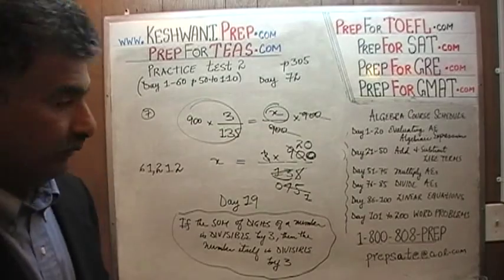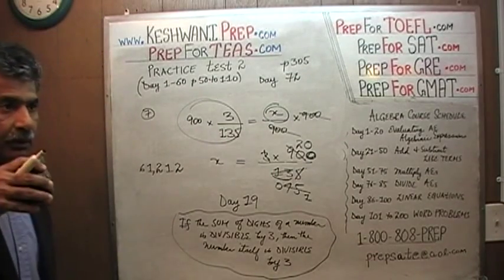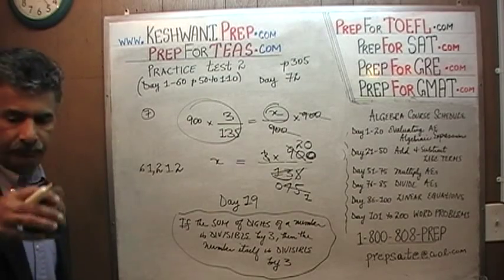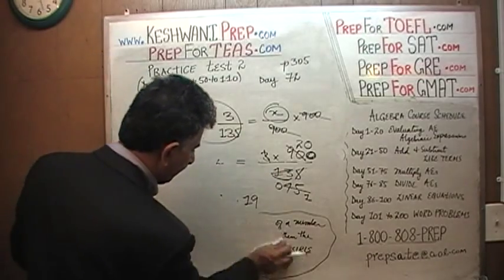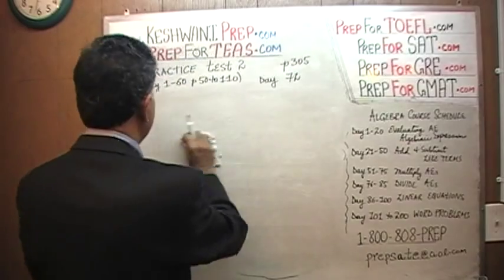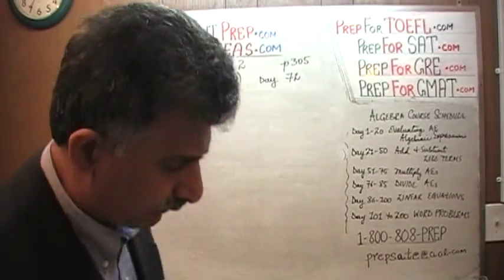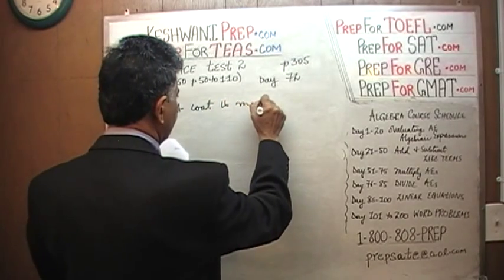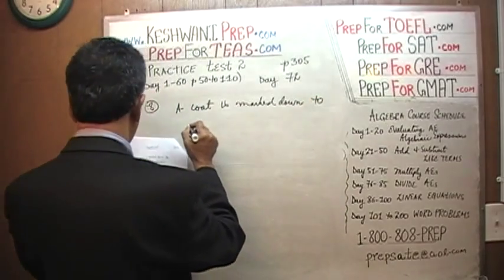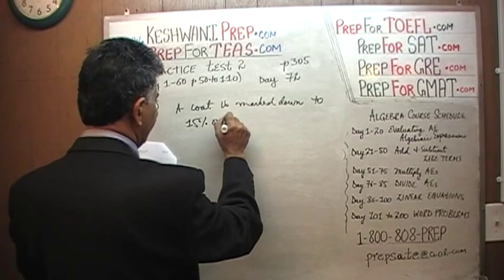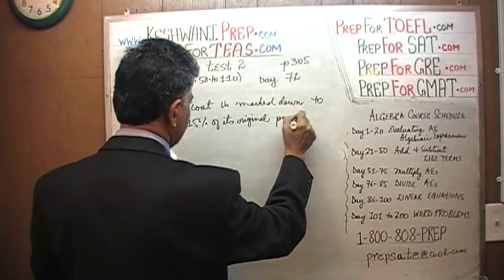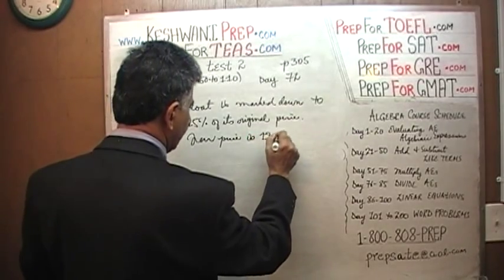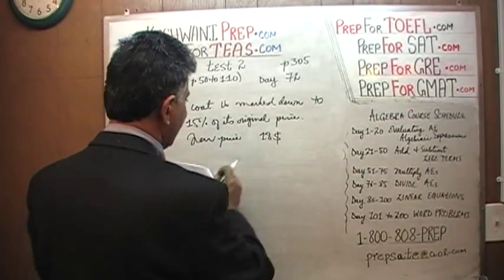Question number 8 is a tricky one — I'm warning you. A coat is marked down to 15% of its original price. The new price — the price after the markdown — we are told is $18. And the question is: what was the original price, or the full price?